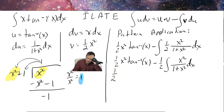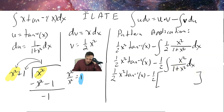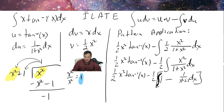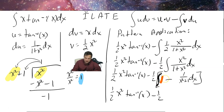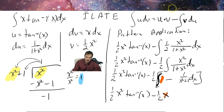We can now rewrite the expression as: one-half x squared tan inverse of x minus one-half times the integral of [1 minus 1/(x² + 1)] dx. Each piece is straightforward: the integral of 1 gives x, and integrating 1/(x² + 1) gives tan inverse of x. Distributing the negative one-half to each term inside the brackets gives minus one-half x...